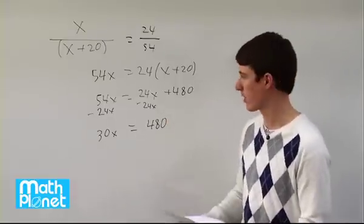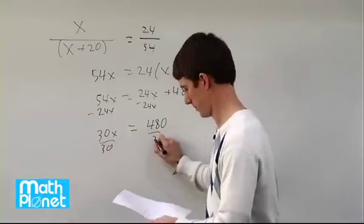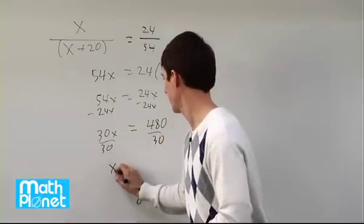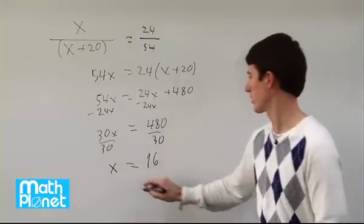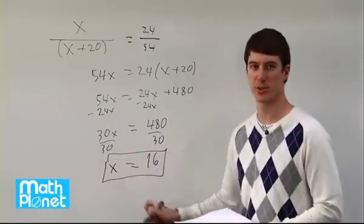Now to get x all by itself, we divide both sides by 30, and we have x equals 16. 480 divided by 30 is just 16. So there's our final answer to solve this equation, x equals 16.